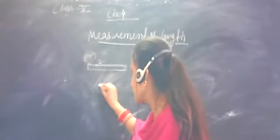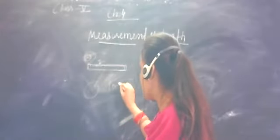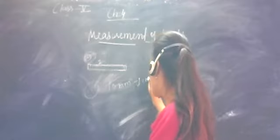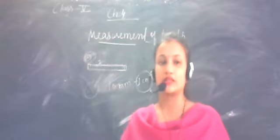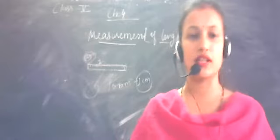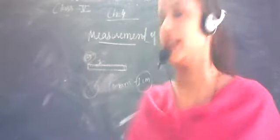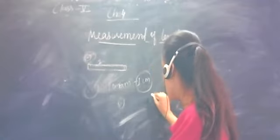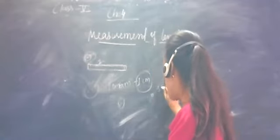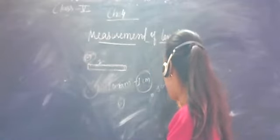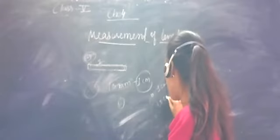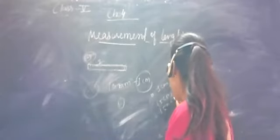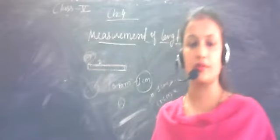So when it becomes 10 lines, what does it become? 10 millimetres become 1 centimetre. If you use the scale in school, it becomes 15 centimetres. So how many millimetres are in 15 centimetres? If 1 centimetre equals 10 millimetres, then 15 centimetres is 150 millimetres.